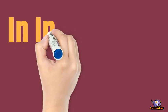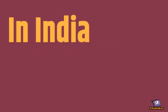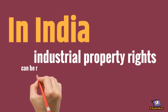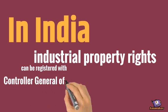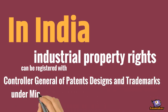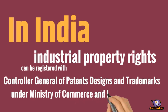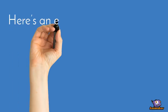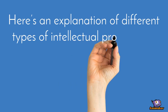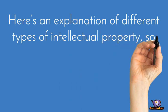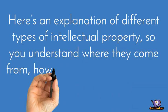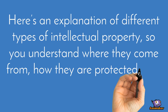In India, industrial property rights can be registered with the Controller General of Patents, Designs and Trademarks under the Ministry of Commerce and Industry. Here is an explanation of different types of intellectual property, so you understand where they come from, how they are protected, and the differences between each.